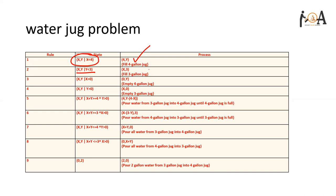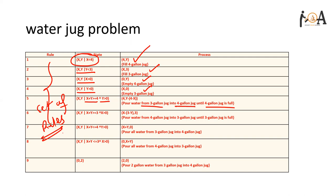The production rules: if state is (X, Y) with Y less than 3, fill the three-gallon jug. If state is (X, Y) with X greater than 0, completely empty the four-gallon jug. If (X, Y) with Y greater than 0, empty the three-gallon jug. Rule five: if X plus Y is greater than or equal to 4 and Y is greater than 0, pour water from the three-gallon jug into the four-gallon jug until the four-gallon jug is full. Rule six: if X plus Y is greater than or equal to 3 and X is greater than 0, pour water from the four-gallon jug into the three-gallon jug until the three-gallon jug is full.